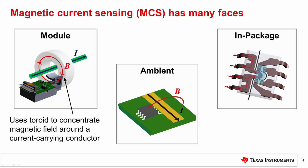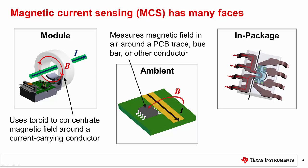First, module-based sensing typically utilizes a magnetic toroid or other geometry to concentrate the magnetic field generated by the current carrying conductor. These systems are typically sold by a third-party manufacturer, as there is a high degree of magnetic design required. Next, ambient magnetic current sensing utilizes the ambient in-air field generated by a PCB trace, bus bar, or other conductor to sense current. This is accomplished using a linear Hall or other magnetic sensor at some fixed mechanical distance from the conductor. This type of solution can also utilize a magnetic concentrator or shield to improve signal levels or reduce the impact of stray fields.